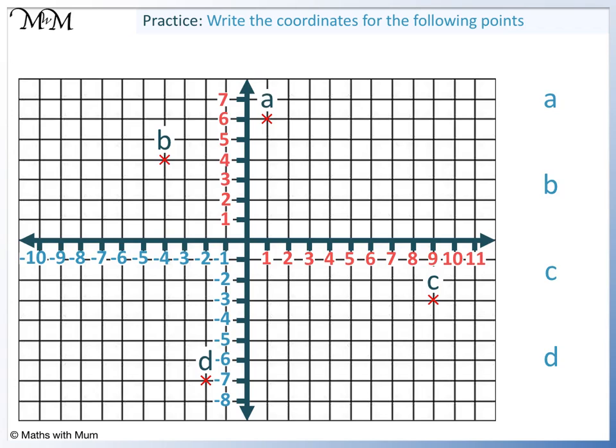Question a. Reading across we have 1. Reading up we have 6. The coordinates are (1, 6).